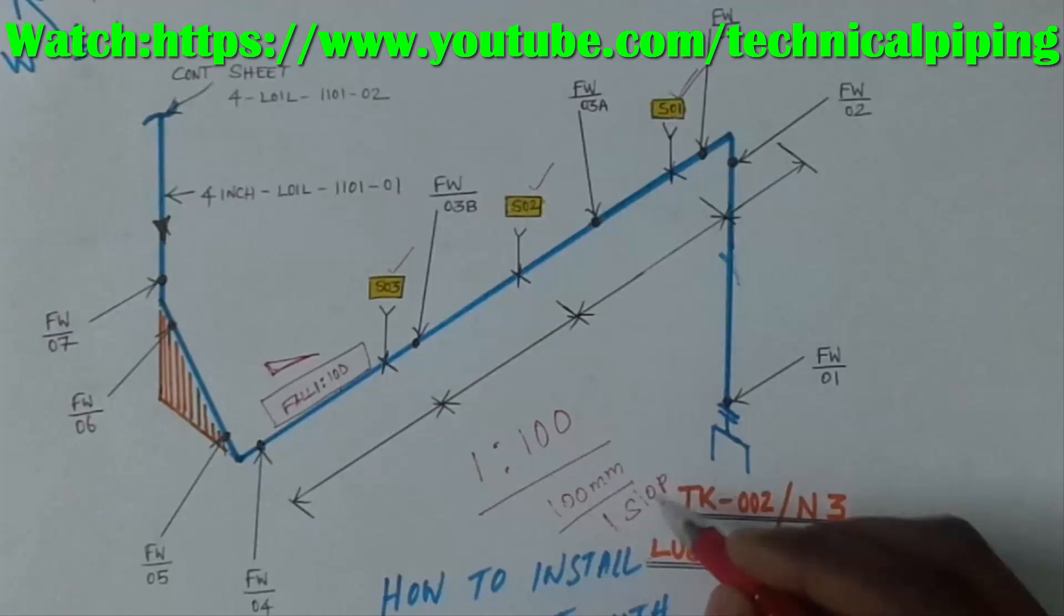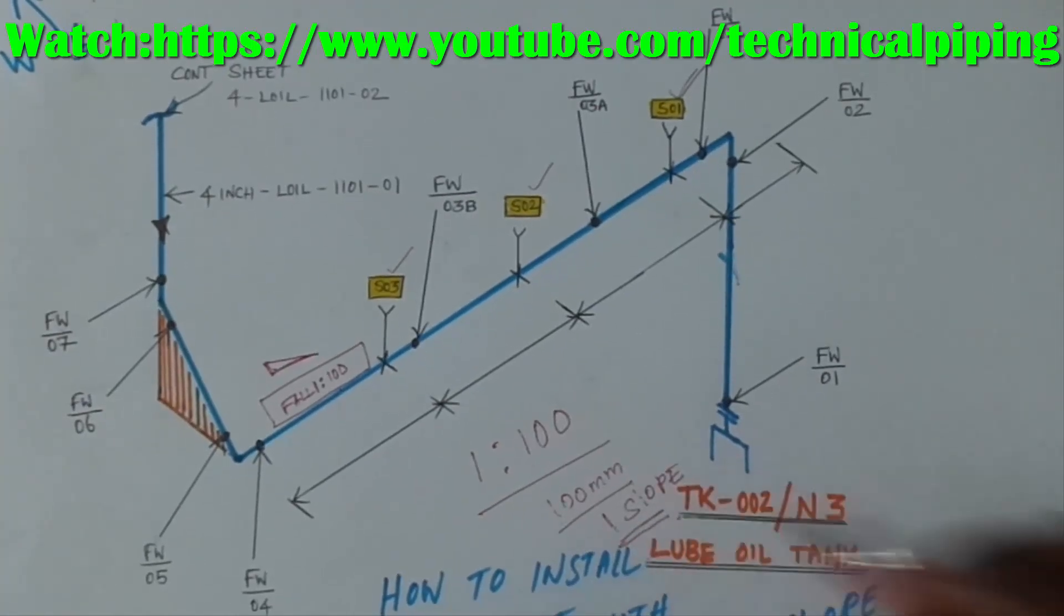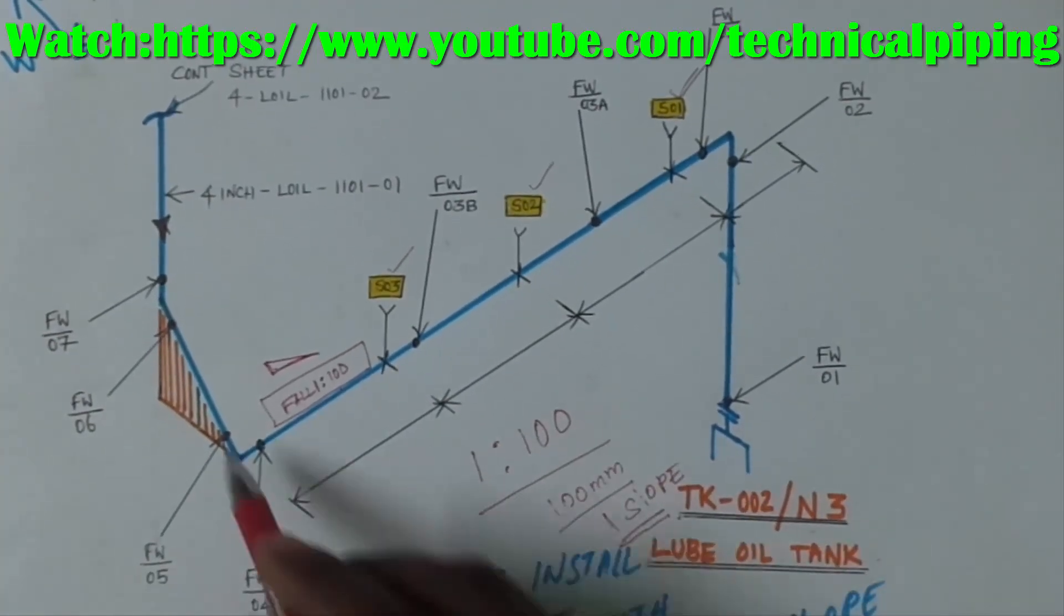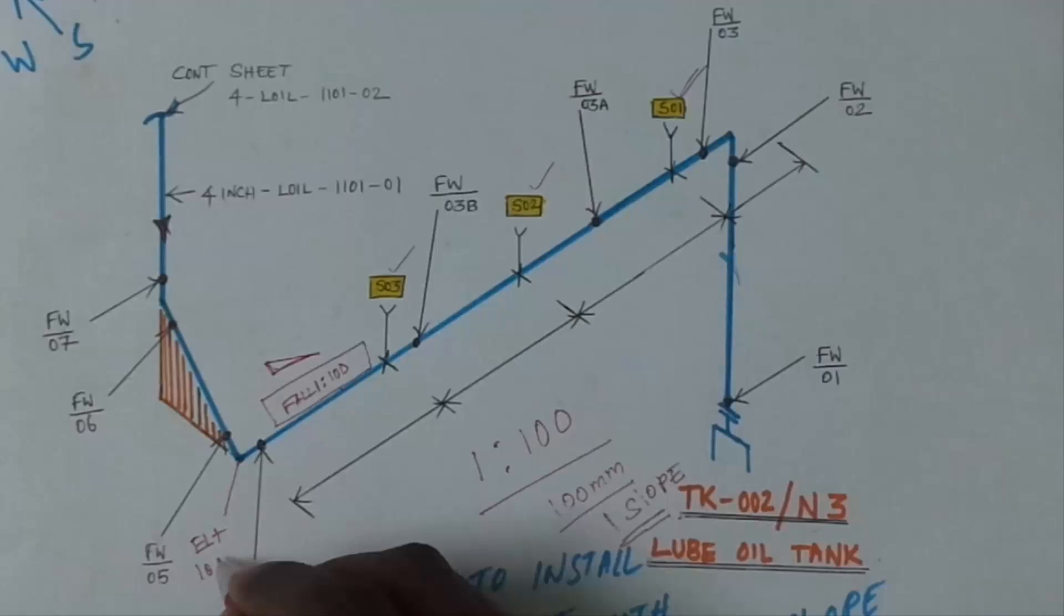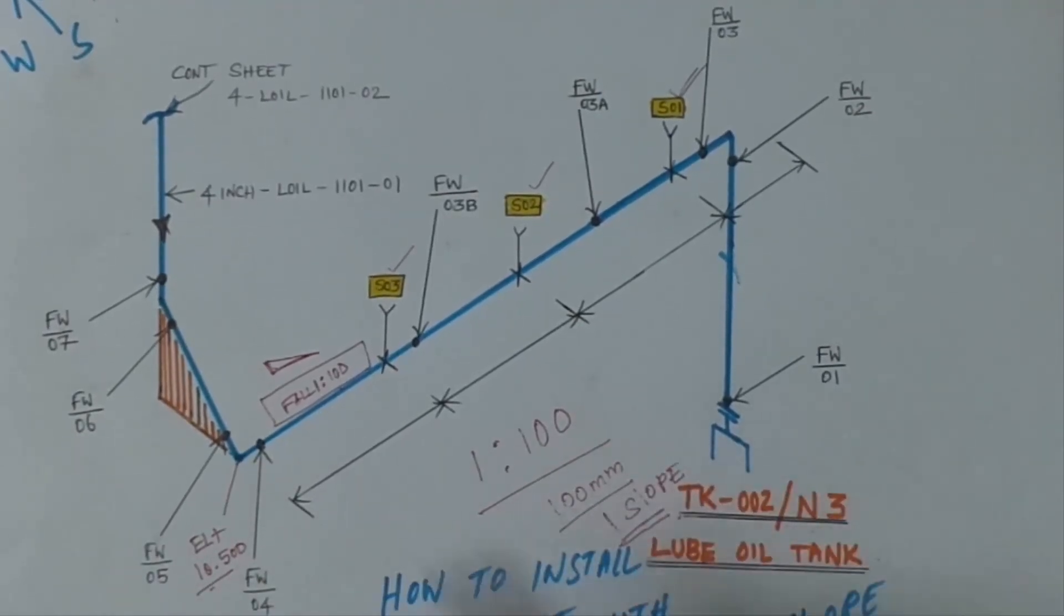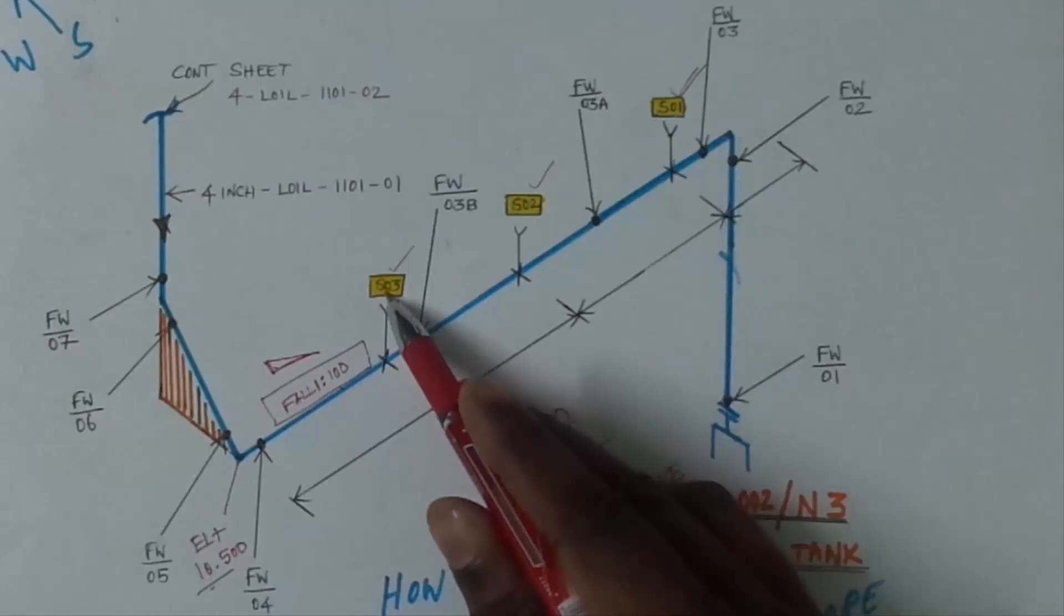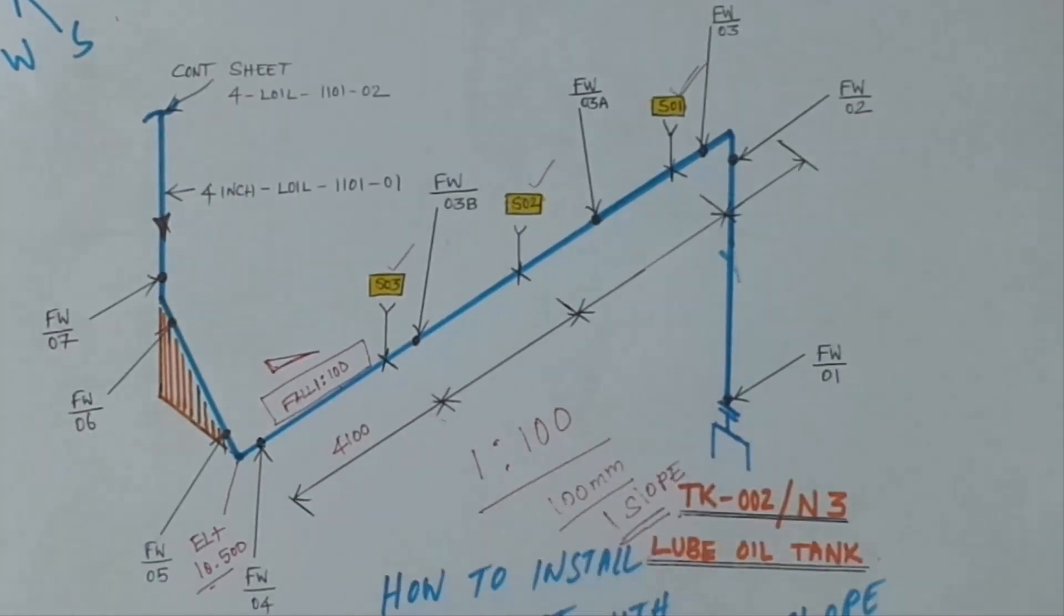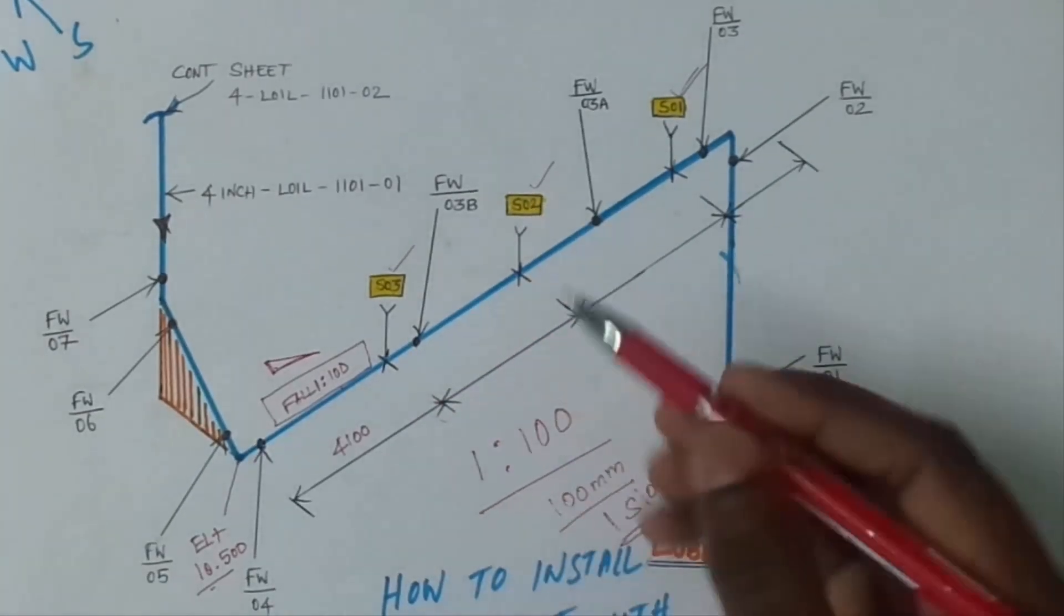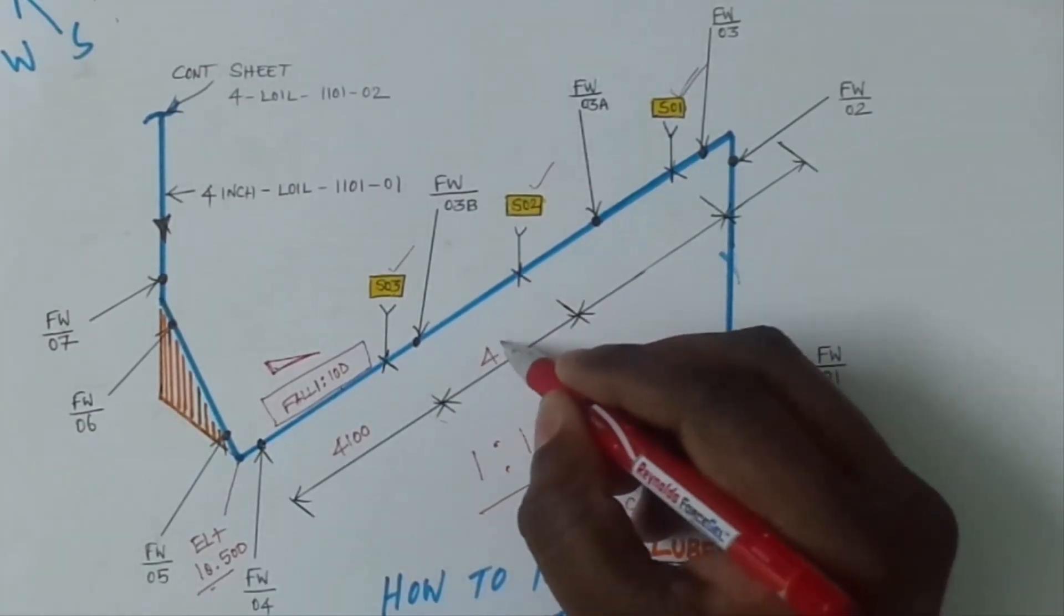For example, this elbow elevation is 10 meters 500 mm. From this elbow to support number 3 is 4100 mm. Support 3 to support 2 is 4200 mm.